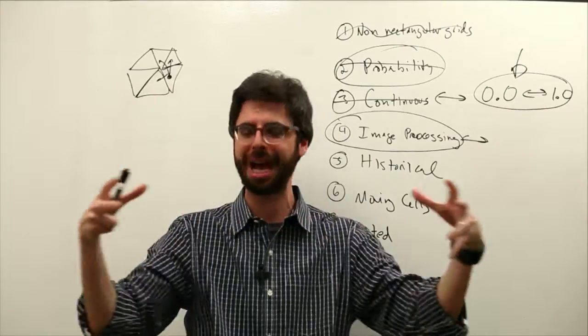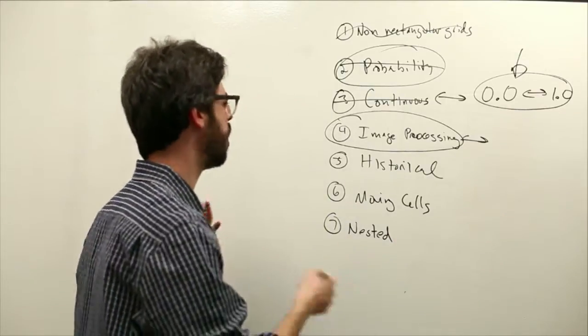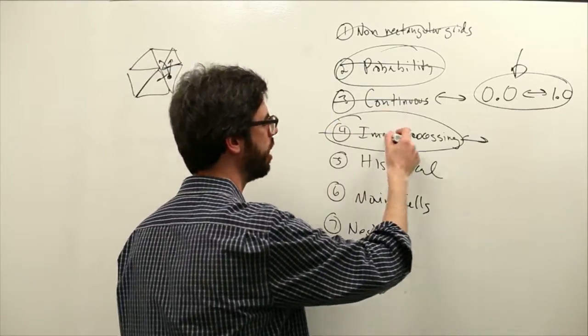how does that height ripple out into neighboring cells? So could we do a water rippling effect with CAs?